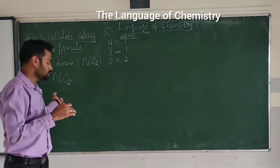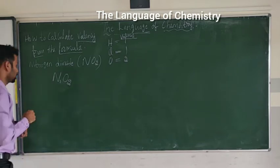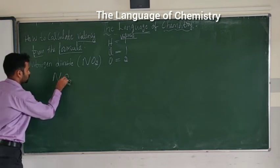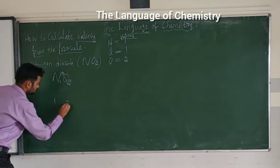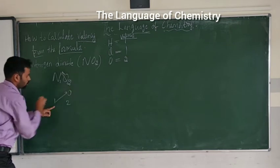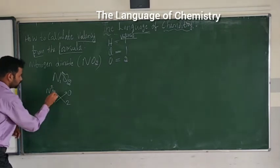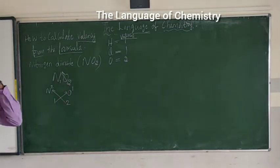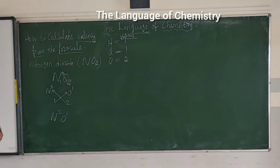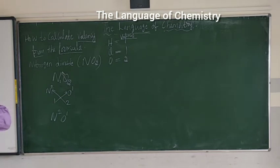Now, what we have to do is change the subscript into the superscript by cross multiplication. For NO2, nitrogen has subscript 1 and oxygen has subscript 2. After cross multiplying, this gives N²O¹.